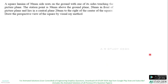Now we shall move to a question on perspective projection. A square lamina of 30mm side rests on the ground with one of its sides touching the picture plane. The station point is 30mm above the ground plane, 20mm in front of the picture plane, and lies in a central plane 20mm to the right of the center of the square. Draw the perspective view of the square by the visual ray method. In this video, we will be explaining only the visual ray method.